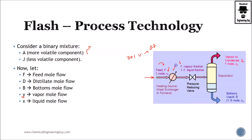We may have heaters which modify temperatures and valves which decrease pressure. This is the flash drum, which is essentially just a vessel or tank, and what we try to do is separate liquid and vapor.